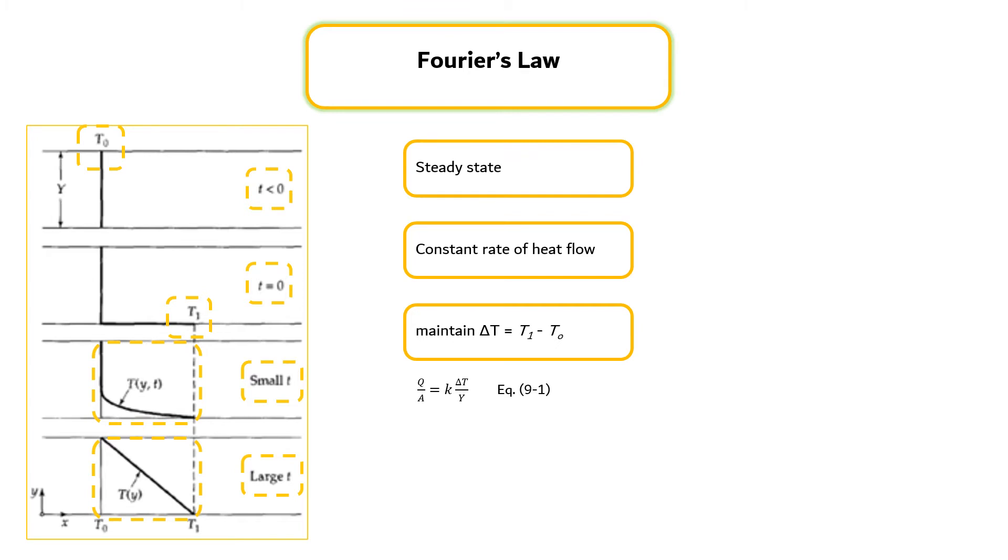The constant of proportionality K is the thermal conductivity of the slab. Equation 9.1 is also valid if a liquid or gas is placed between the two plates, provided that suitable precautions are taken to eliminate convection and radiation.